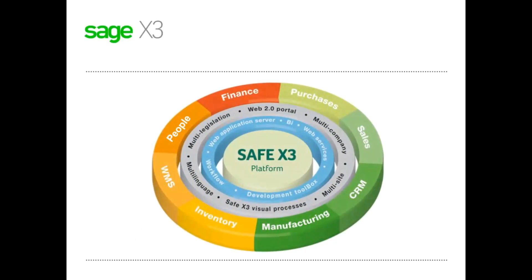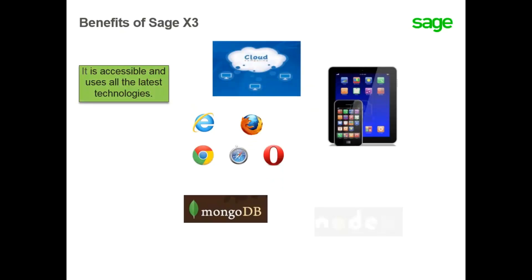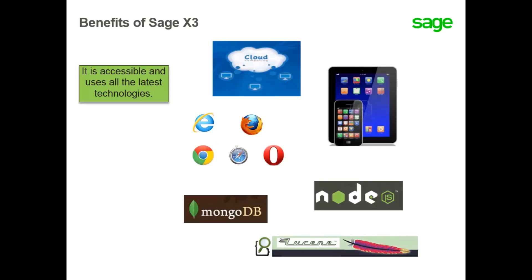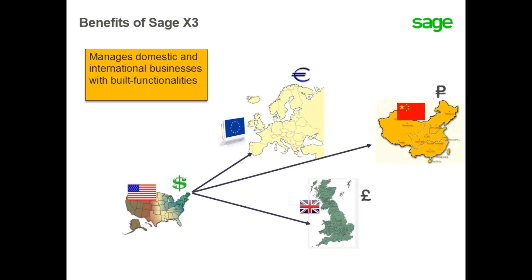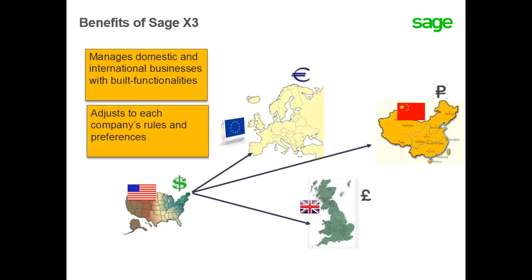Sage X3 has all the capabilities of an enterprise management solution and uses all the latest technologies available on the market today. You are no longer constrained to one place. Connections are available anytime, anywhere, with versions available on the cloud and accessible from all browsers and mobile devices. Sage X3 is a powerful integrated enterprise management software designed to support all business processes within an organization both locally and internationally, and it also adjusts to each company's rules and preferences.